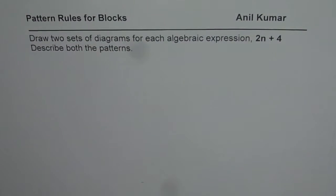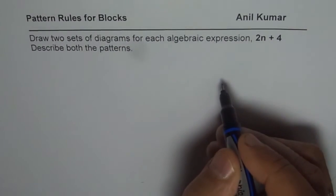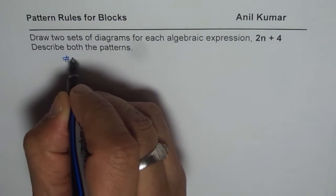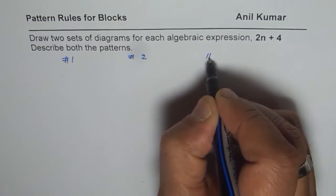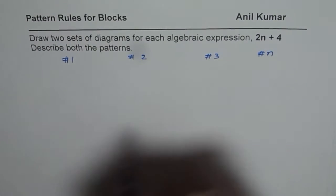We need to draw two different looking patterns for the same rule, 2n + 4. Let's sketch the first pattern. This is figure number 1, then figure number 2, and figure number 3. These values are the values for n.